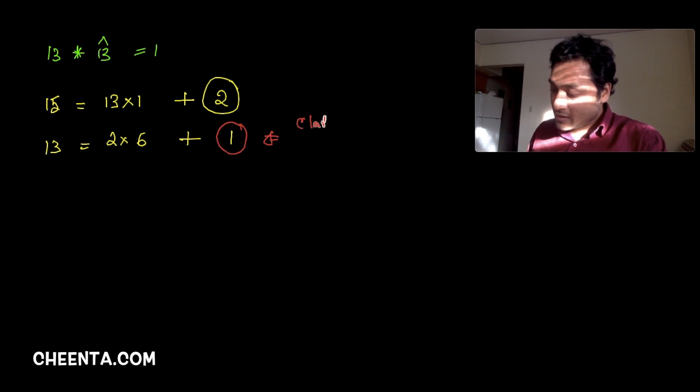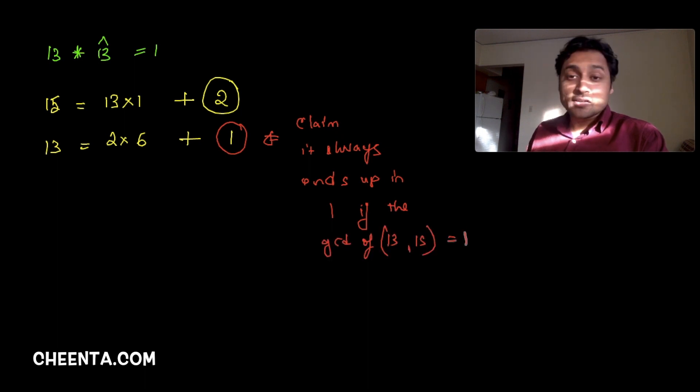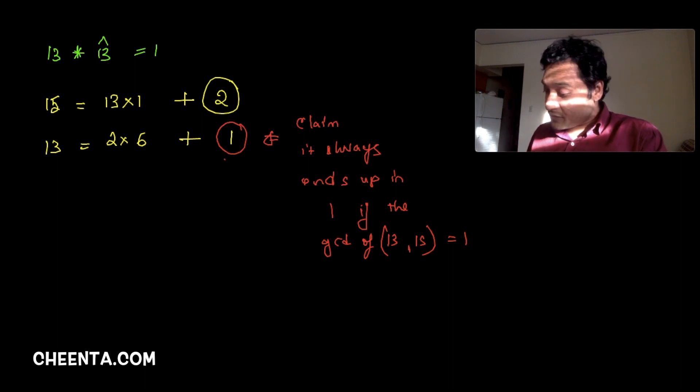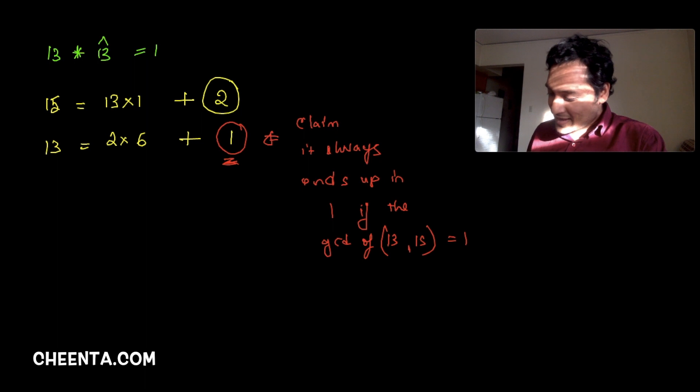The claim is it always ends up in 1 if the GCD of 13 and 15 is equal to 1. So if the GCD was 1, this process will always end up in 1. Once we have this 1, we will reverse the process. We sort of place the reverse gear and we will try to isolate 1. So now 1 is equal to 13 minus 2 times 6.